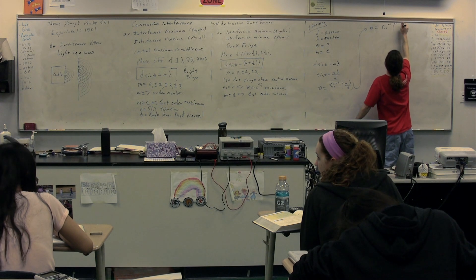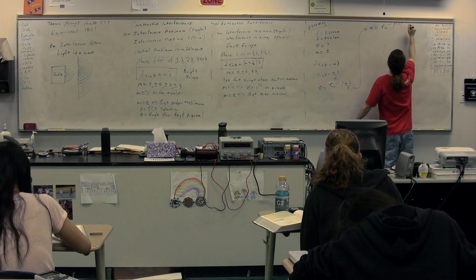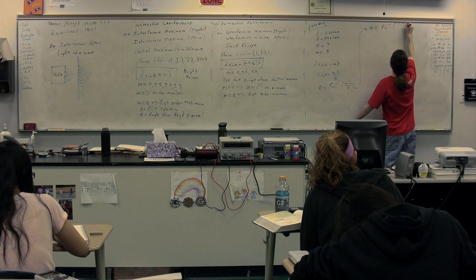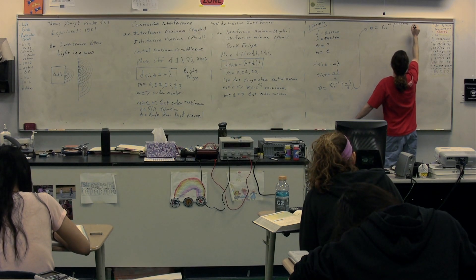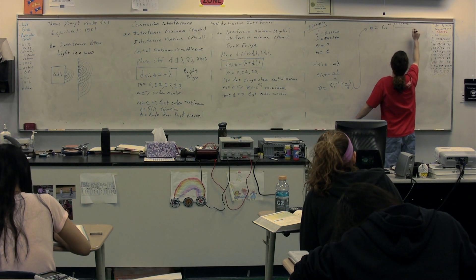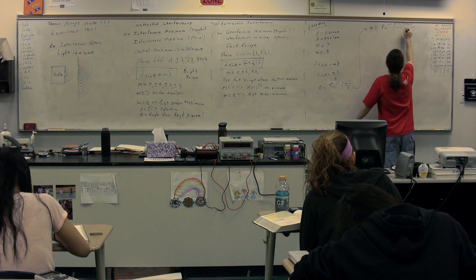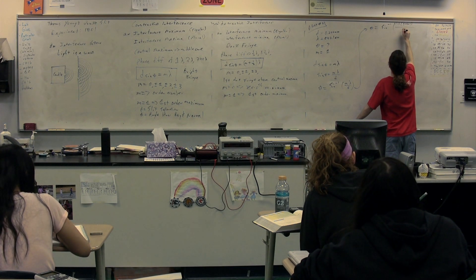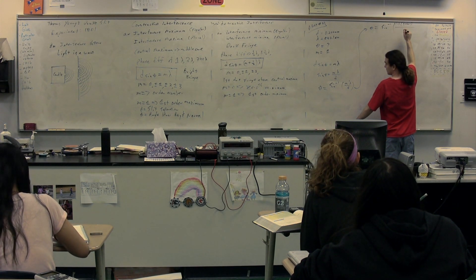Sine of m is 1, and then wavelength is 546.1 nanometers divided by the d of 0.25 millimeters.